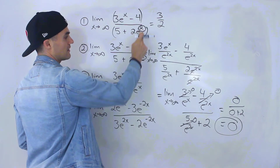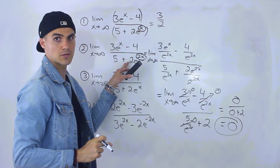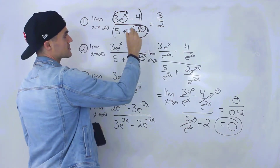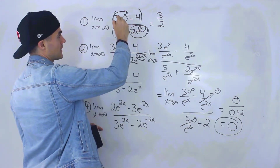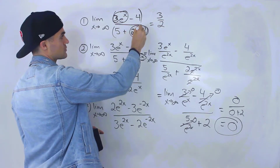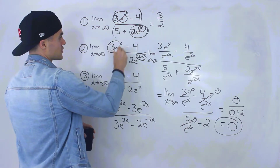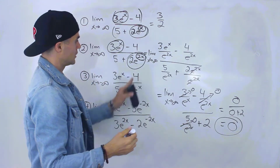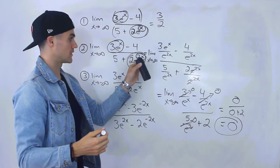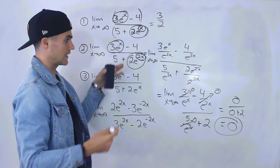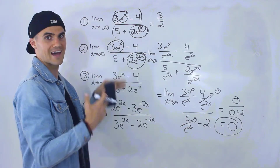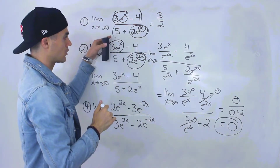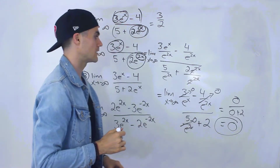This makes sense because in number one, 3e^x and 2e^x are approaching infinity at the same rate — there are just coefficients of 3 and 2 in front. But in number two, because we're multiplying the exponent by 2, e^(2x) increases a lot quicker than e^x as x gets larger. So the denominator increases much faster than the numerator, meaning we get a smaller number over a much larger number, which goes towards zero.